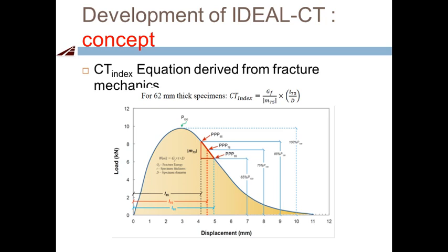That's the test we're talking about — so simple, just mold the specimen and test it very quickly, then you get the result. In terms of the Ideal-CT concept, the parameter we use to characterize cracking resistance is called the CT Index. The equation has three major components: GF (fracture energy), M75 (the post-peak slope at 75% maximum load), and L75 (the post-peak displacement at 75% maximum load). D is the specimen diameter — a constant.